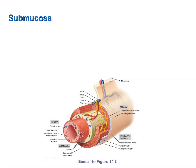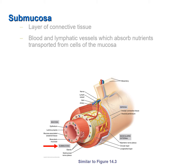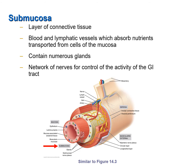Deep to the mucosa is the submucosa. The submucosa consists of connective tissue. There are numerous blood vessels and lymphatic vessels embedded in the connective tissue, and they absorb nutrients transported by cells of the mucosa from the lumen. There are also numerous glands in the submucosa which secrete substances into the lumen to support digestion. Lastly, there are numerous networks of nerves in the submucosa that control the activity of the GI tract.